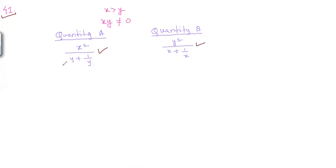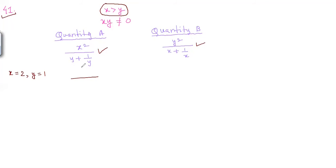Let's pick values satisfying x greater than y and both nonzero. Choose x equals 2 and y equals 1. Now test quantity A: x squared gives 4, and y plus 1 over y gives 1 plus 1 over 1, which is 2. So quantity A equals 4 divided by 2, which is 2.